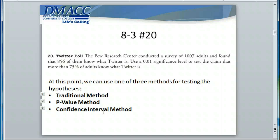All the requirements needed to use the normal approximation of the binomial distribution are verified, so we can use the normal distribution to help us calculate the test statistic as well as critical values. In order to continue with our test, we can use one of three methods — or all three to see if they come to the same conclusion: the traditional method, the p-value method, and the confidence interval method.